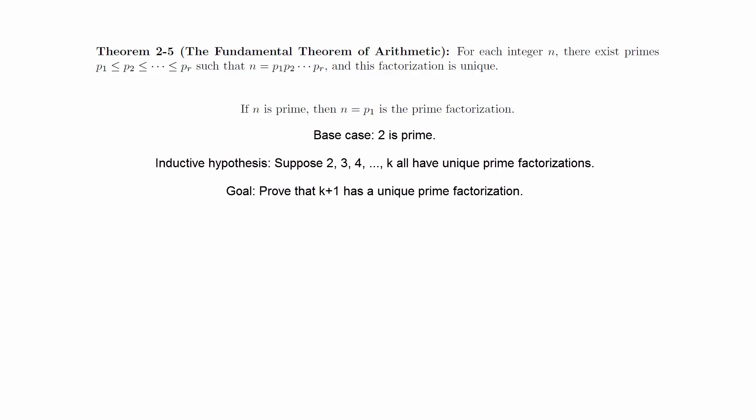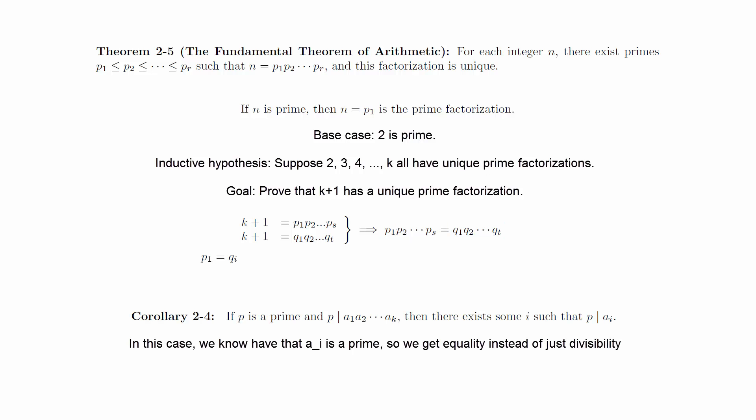For the uniqueness proof, suppose that 2, 3, up through k all have unique prime factorizations. Suppose that we have two factorizations of k plus 1 where all the primes are ordered as in the statement of the theorem. Notice that p1 divides the product of the q sub i, so that p sub 1 equals q sub i for some i by corollary 2-4. Also, notice that q sub 1 divides the product of the p sub j, so q sub 1 equals p sub j for some j.